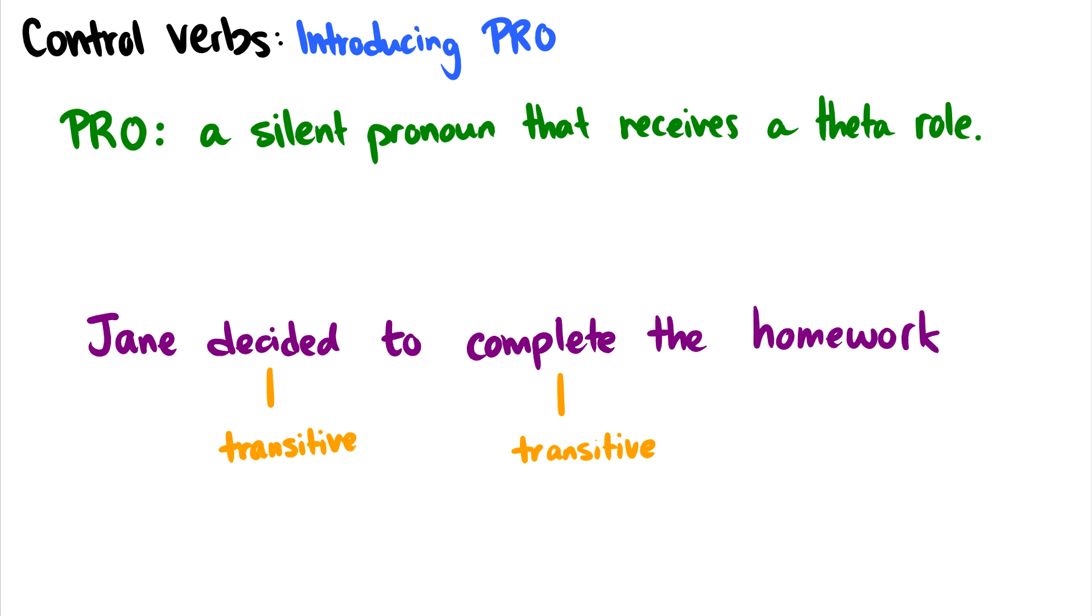Let's look at the first example: Jane decided to complete the homework, and let's take a look at the verbs here. The first verb is decided, and it is transitive, which means it takes a decider, which would be the agent, and then it takes a proposition that is decided on. So in this case, decided to complete the homework, so it'll take a CP complement. But then we have the verb complete, which has a theme, that is the thing being completed, but it also has an agent, and that is the completer, and this agent is mandatory.